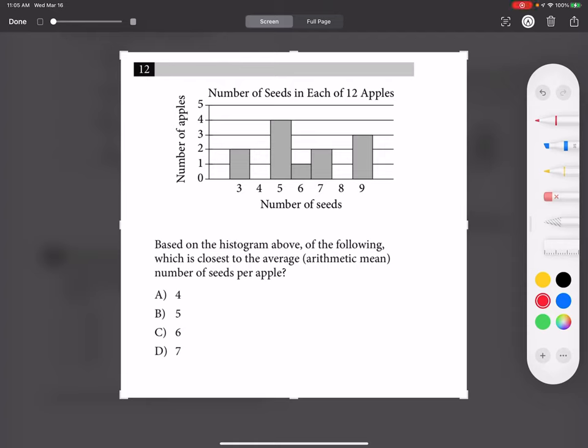Based on the histogram above, of the following which is closest to the average arithmetic mean number of seeds per apple? Okay, so we need to know the summation of seeds divided by the number of apples to find the total number of seeds.